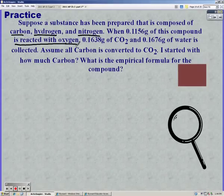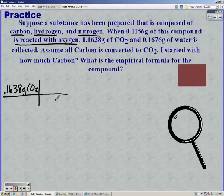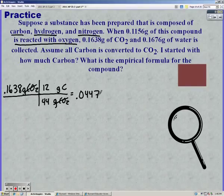You first have to figure out how much of that carbon dioxide is carbon. So we're going to write our grams of CO2, set up our dimensional analysis table. Mass of CO2 has to go on bottom to cancel out, and we're looking for mass of carbon. Carbon dioxide weighs 44 grams, and 12 of that was due to carbon. So we multiply and divide, and we get 0.0447 grams of carbon.